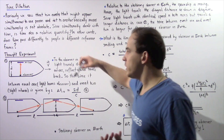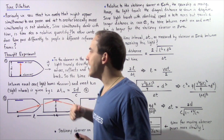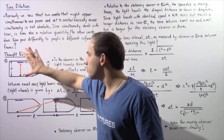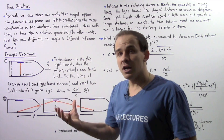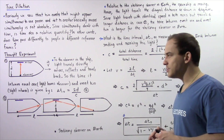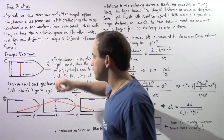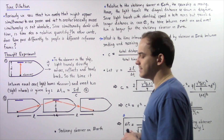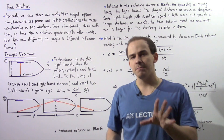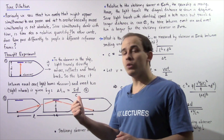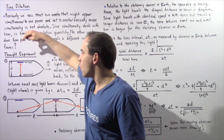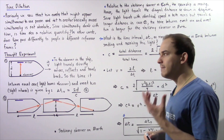Inside that spaceship, we have a mirror attached to one end, and at the other end we have an observer that is stationary with respect to that spaceship. Because we are in the reference frame of this spaceship, the observer is assumed to be stationary. Let's suppose the distance between the observer and the mirror is given by lowercase d. Event number one is defined as when a person takes a flashlight and quickly turns it on and off, sending a beam of light directly across to the mirror.